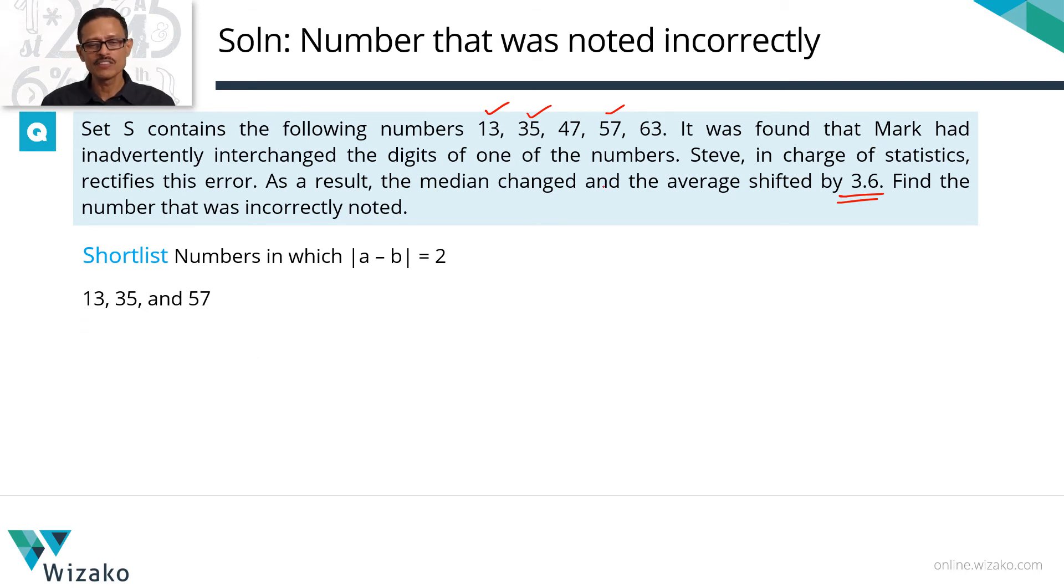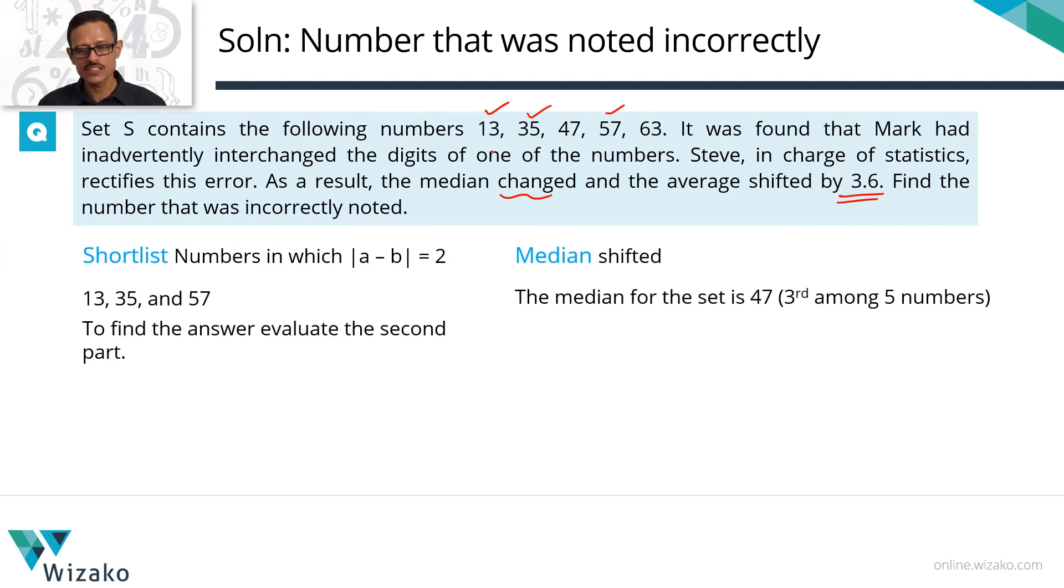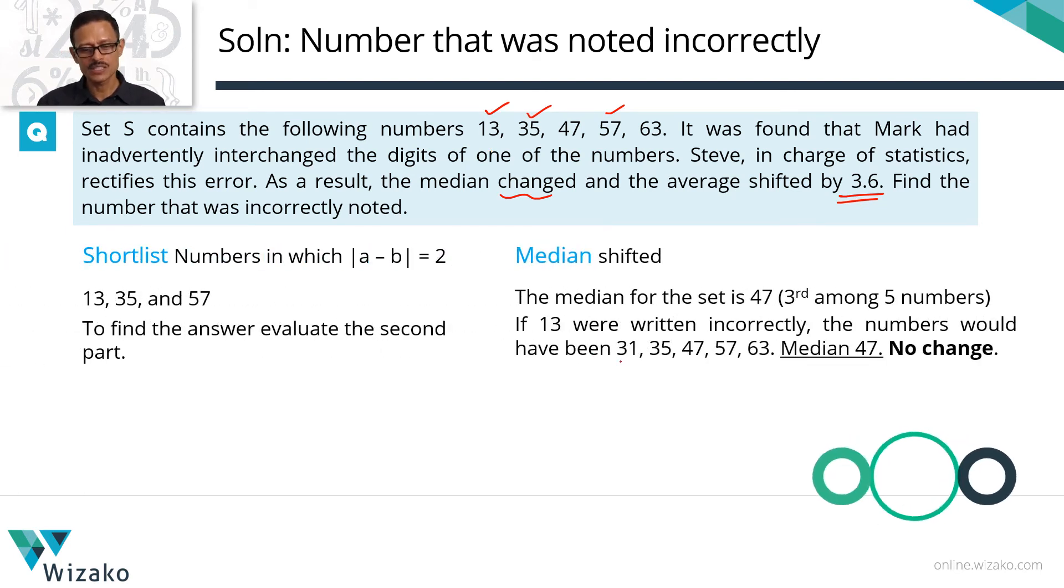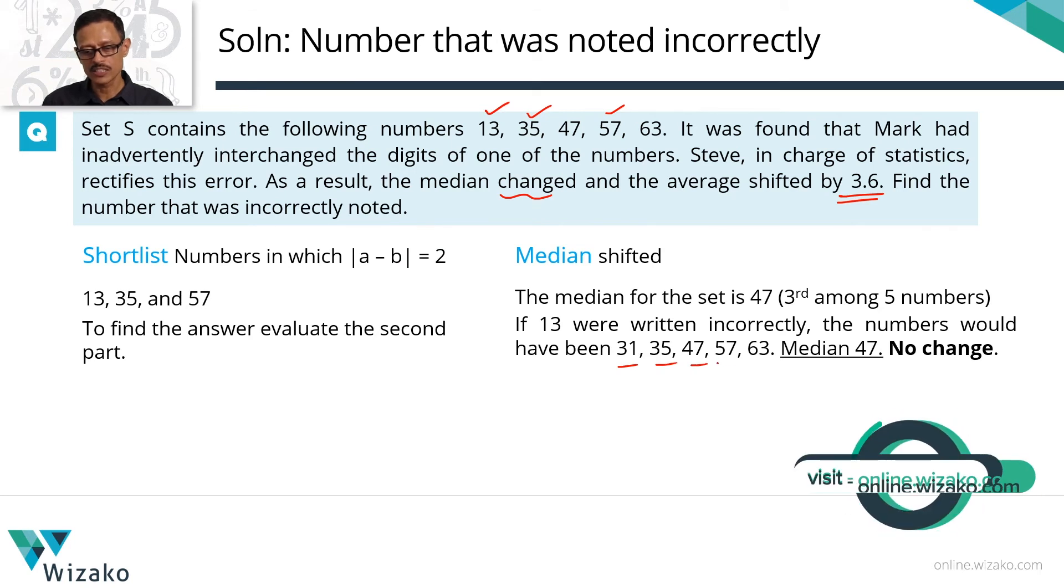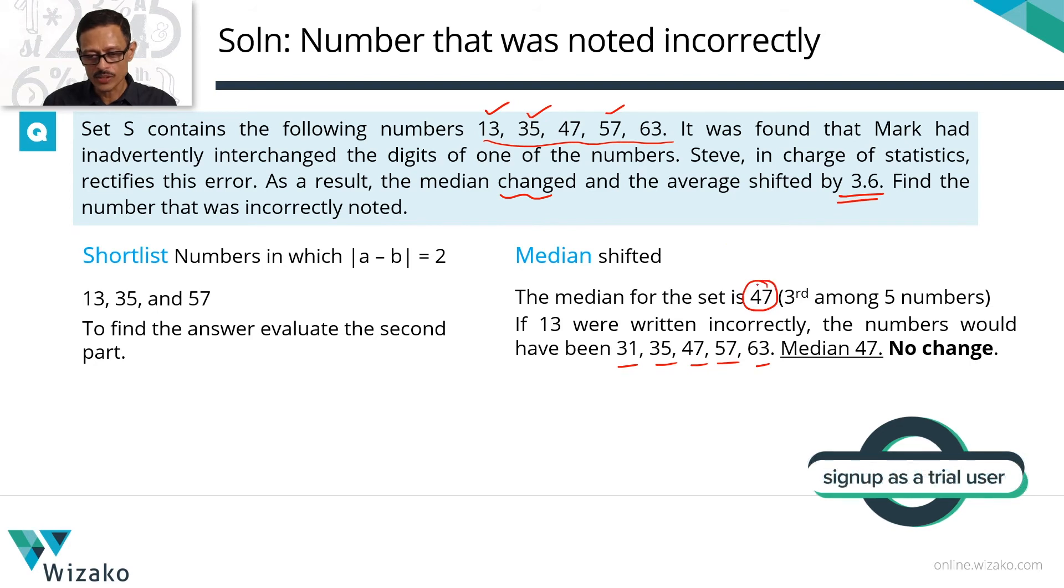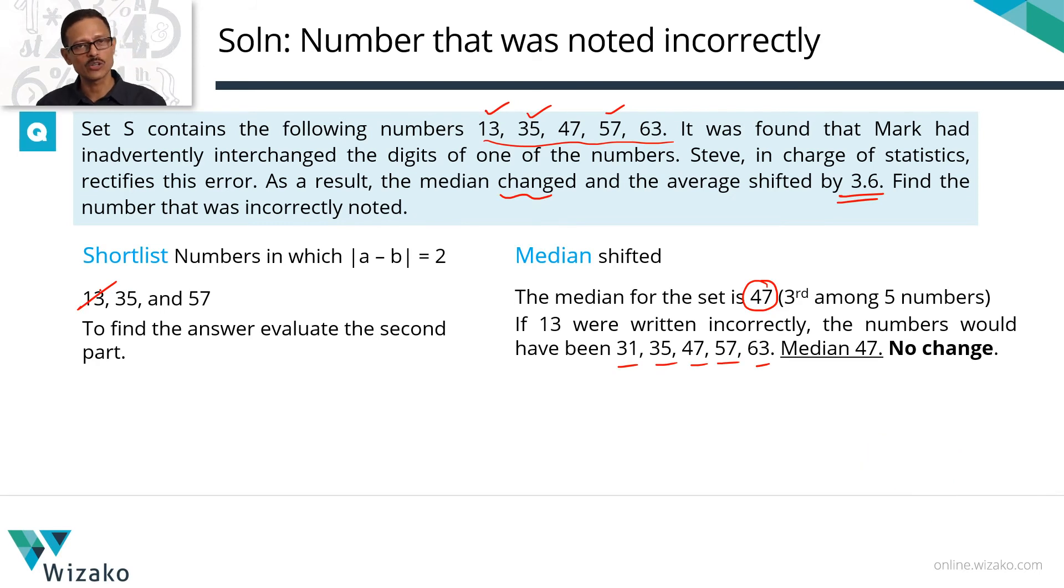Let's check out if it is 13, will the median change? Because the second thing should also happen. If it's 13, let's rewrite the numbers. The number should have been, the correct version is 13. This guy noted it down as 31. So what is the set of numbers that he has noted it down? For him, the numbers are 31, 35, 47, 57, 63. What's the median as it stands right now? The median is 47, which is the middle number. When he wrote this 13 as 31, is there a change in the median? 47 still continues to be the third number. No change in the median. So 13 is not the number we are talking about.